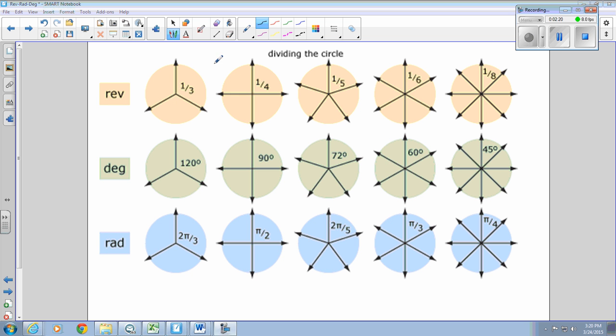If we look at dividing a circle up, one third of a revolution is the same as 120 degrees, is the same as 2 pi over 3 radius measurement, radians, 2 pi over 3 radians. Pi over 2, 90 degrees, that's a quarter circle.